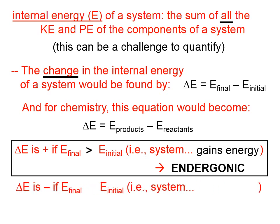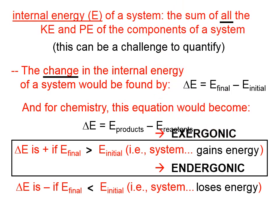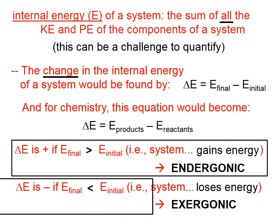On the other hand, if the change in energy is negative, it's because the final internal energy is less than the initial, and the system has lost energy. We call that an exergonic process.